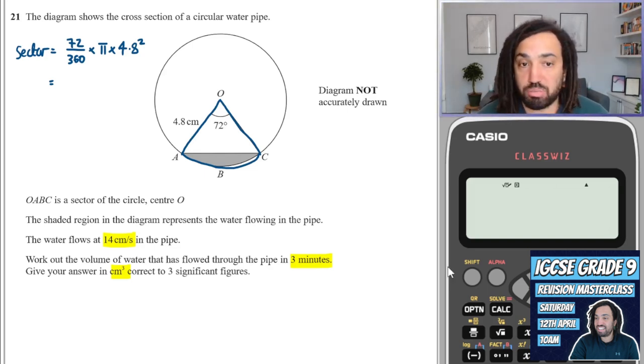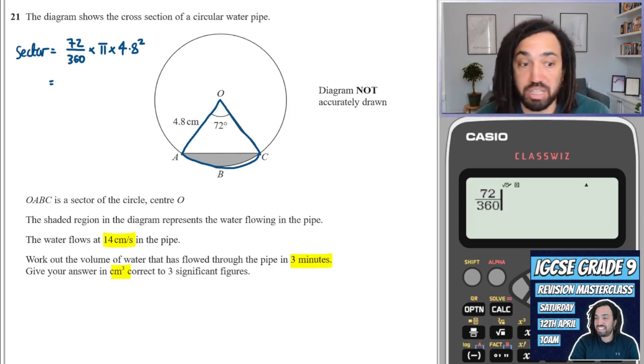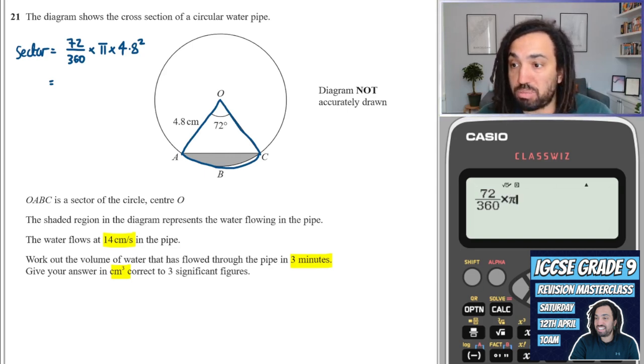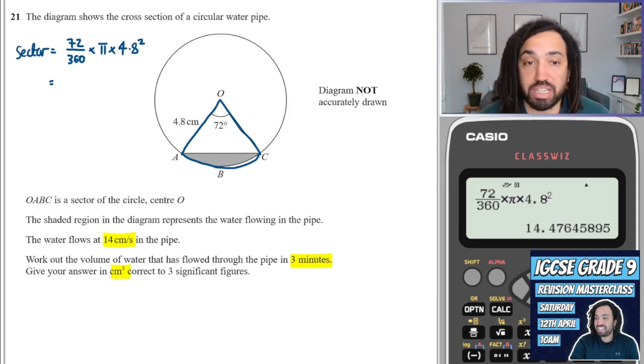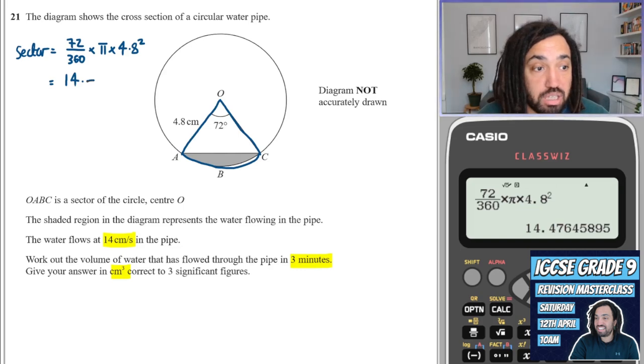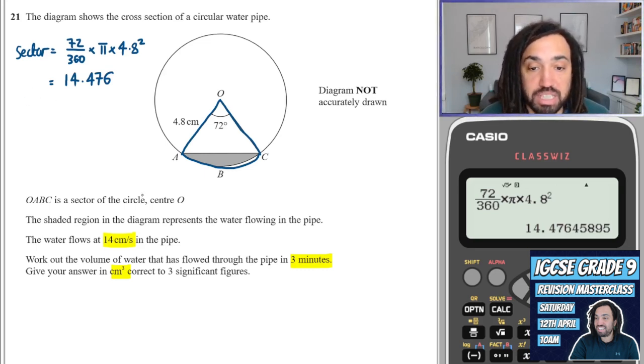I will go to the trouble of working it out just because if I was in an exam and I wasn't doing a speed run, then I would make sure that I put all of my working down just in case I don't get the final answer right. I will definitely get some working marks. So that would be 14.476. And that degree of accuracy is absolutely fine. I don't think we're going to slip up there, particularly because it says three significant figures as our final answer. So I've given it to five, so we should be fine.